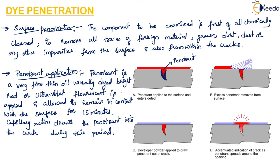The third step is excess penetrant removal. This is a very delicate step which must be done carefully — we remove the penetrant only from the surface, making sure that the penetrant which has gone inside the crack is not removed.